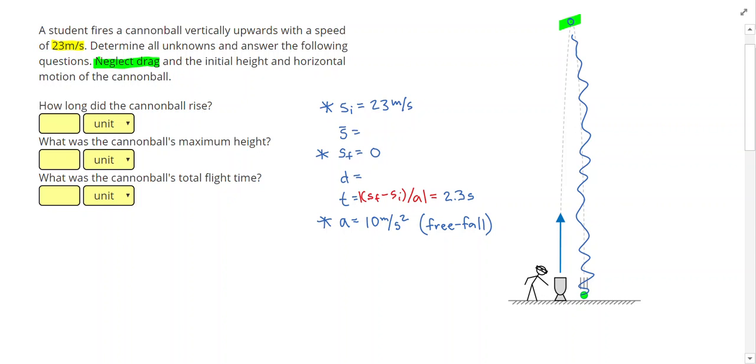Next, I'm going to find the average speed, so the average speed will be halfway between the initial speed and the final speed, so that would be, in this case, just initial speed divided by 2, which gives me 11.5 meters per second. And finally, I can calculate my distance by doing average speed times the time, which gives me 11.5 times 2.3, or 26.45 meters.